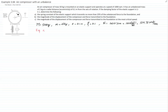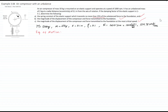We get the equation of motion, as explained in the theory slides. It is the mass of the machine times acceleration, plus the damping constant times velocity, plus the spring constant times displacement, equals the unbalanced force. The unbalanced force is the mass of the unbalance times the eccentricity times the speed of rotation squared times sine of omega t. So F₀ equals M·e·ω².